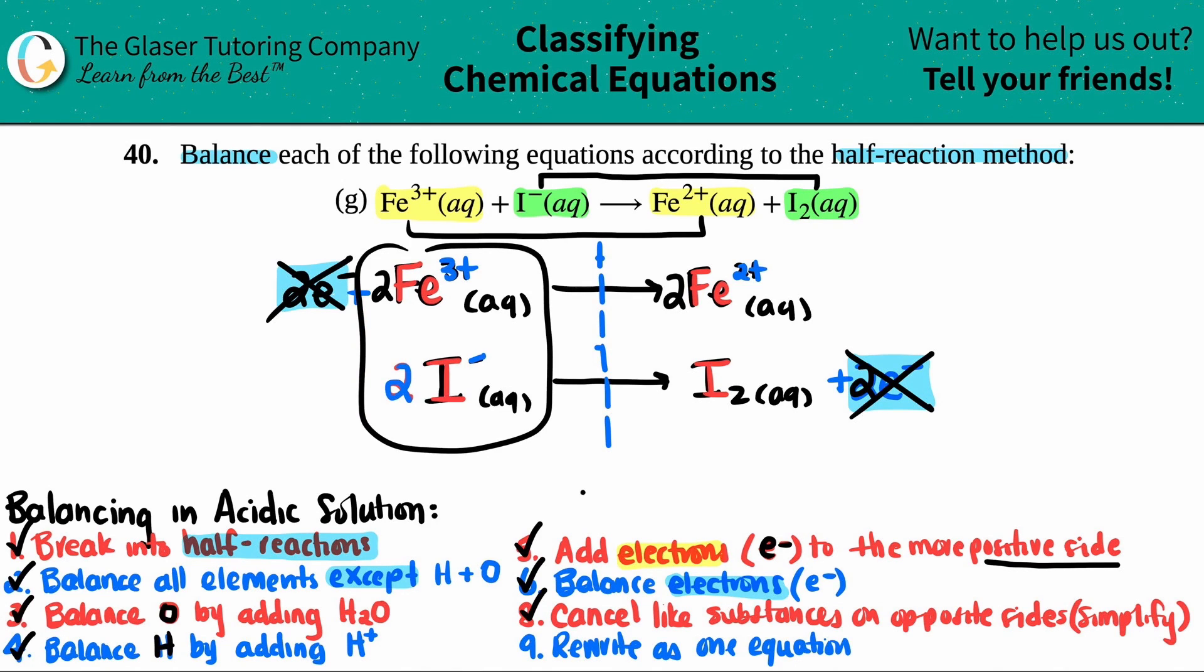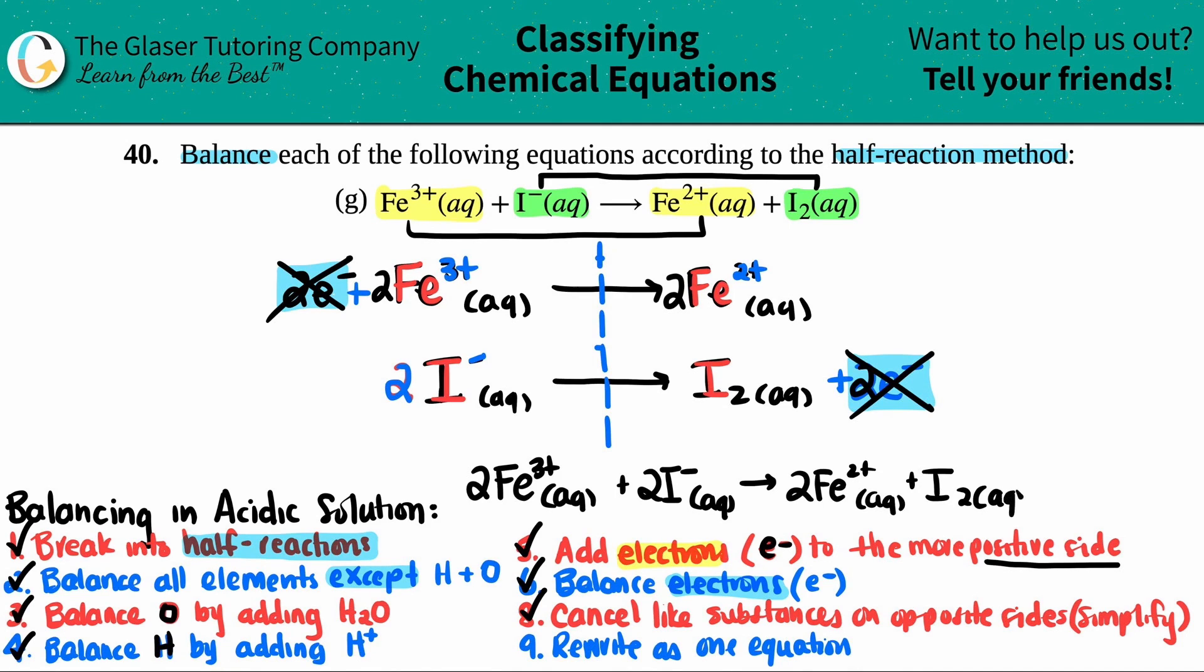So now all we have to do is just rewrite as one equation. Everything that's on the left-hand side goes on the left-hand side of the reaction. And then everything on the right as well. So the final answer would be 2Fe³⁺ aqueous plus 2I⁻ yields 2Fe²⁺ aqueous plus I₂ aqueous. It doesn't matter which one you wrote first on the left side or the right side. It just matters that who's ever on the left has to be on the left. Who's ever on the right has to be on the right. And this is your final answer.